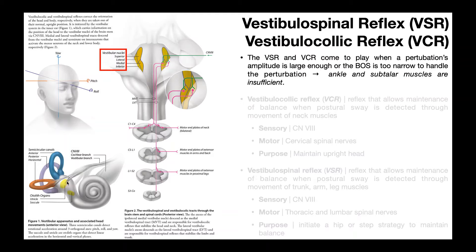That information is then relayed through the vestibular nerve, where it fuses with the cochlear nerve to become cranial nerve 8, or the vestibulocochlear nerve. You can see the vestibulocochlear nerve bringing that sensory information into the central nervous system. The vestibular information comes into the vestibular nucleus on the ipsilateral side.